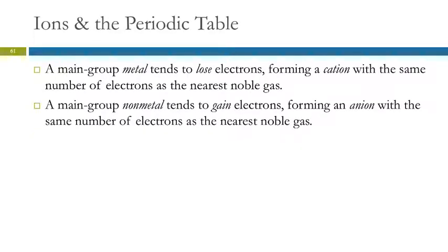We mentioned earlier that main metals tend to lose electrons forming cations. Non-metals tend to gain electrons. We can predict how many electrons they're going to lose or gain if they're in the main groups. Main group metals tend to lose electrons to form a cation that has the same number of electrons as the nearest noble gas.